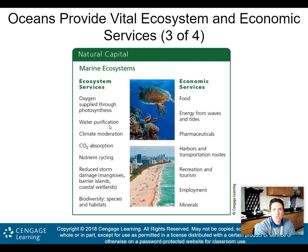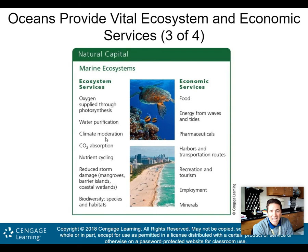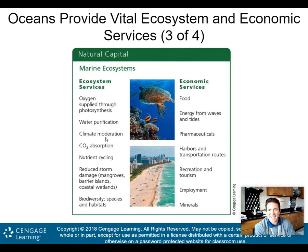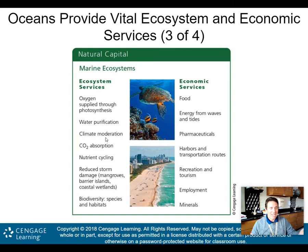Here is some of the natural capital that marine ecosystems provide: oxygen supplied through photosynthesis, water purification, climate moderation through ocean currents, absorbing carbon dioxide, nutrient cycling, reduced storm damage from mangroves and barrier islands, biodiversity, food, energy from waves and tides, pharmaceuticals, harbors and transportation routes, recreation and tourism, and employment and minerals extracted from the ocean.